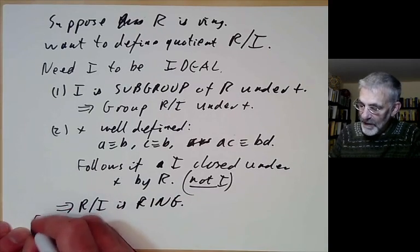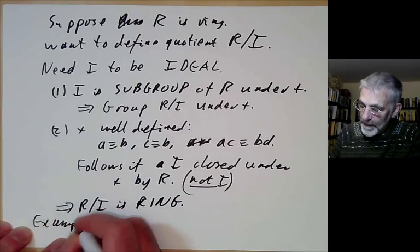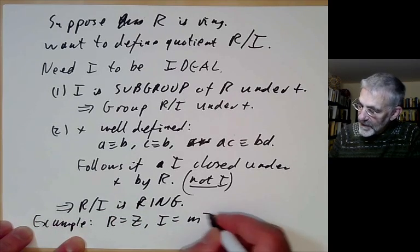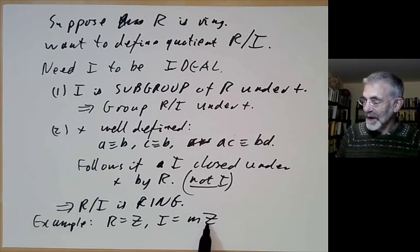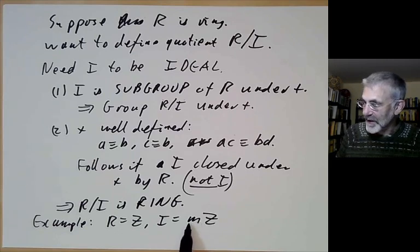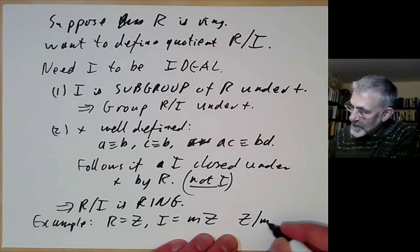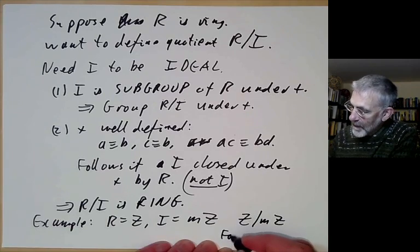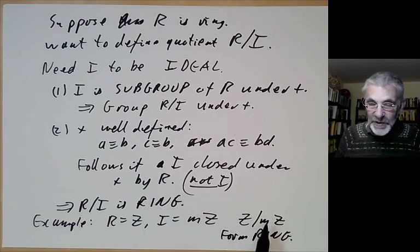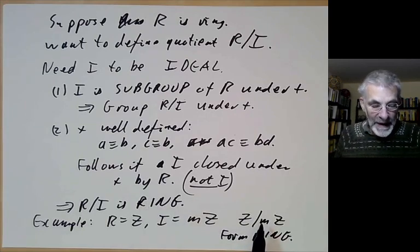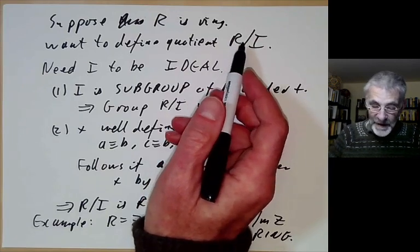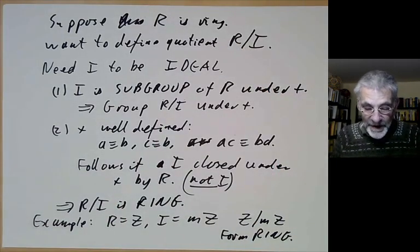The standard example is to take R to be the integers and I to be mZ. Obviously I is closed under multiplication by all integers, so it's an ideal, and we find that Z/mZ is a ring. So the construction of integers modulo m generalizes to any ideal of any ring.